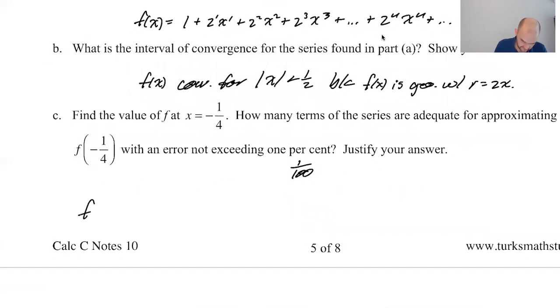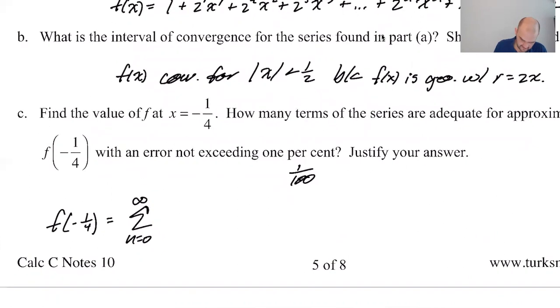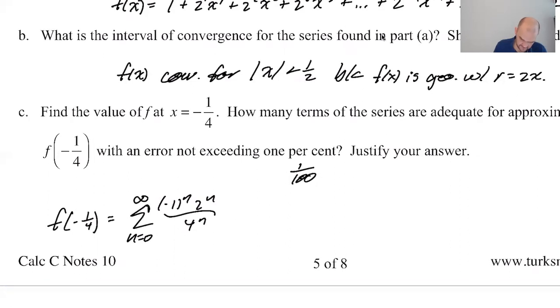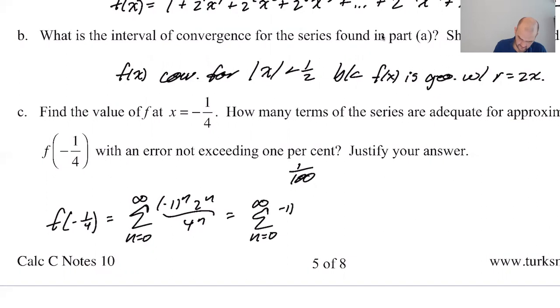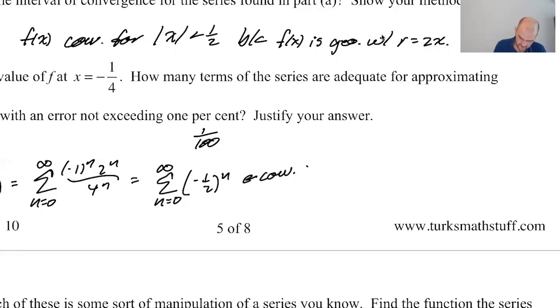So I'm going to find the series for F of negative one fourth. So F of negative one fourth is going to be, this is a weird way to do it, but I wanted to get the Nth term right. So I'm going to take this, I'm just plugging in negative one fourth. So that's 2 to the N. So it'll be negative one to the N, 2 to the N over 4 to the N, so that's a negative one to the N and then just one half to the N, negative one. Oh, you know what? It's negative one half to the N. So that's what the series simplifies to.